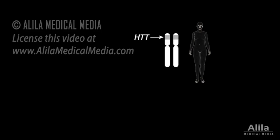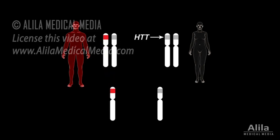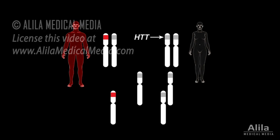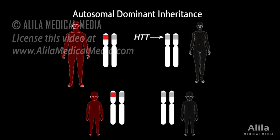A person has two copies of the HTT gene, but one abnormal copy is sufficient to cause the disease. Children of an affected parent have a 50% chance of receiving the abnormal copy, hence a 50-50 chance of inheriting the disease. This pattern of inheritance is known as autosomal dominant.